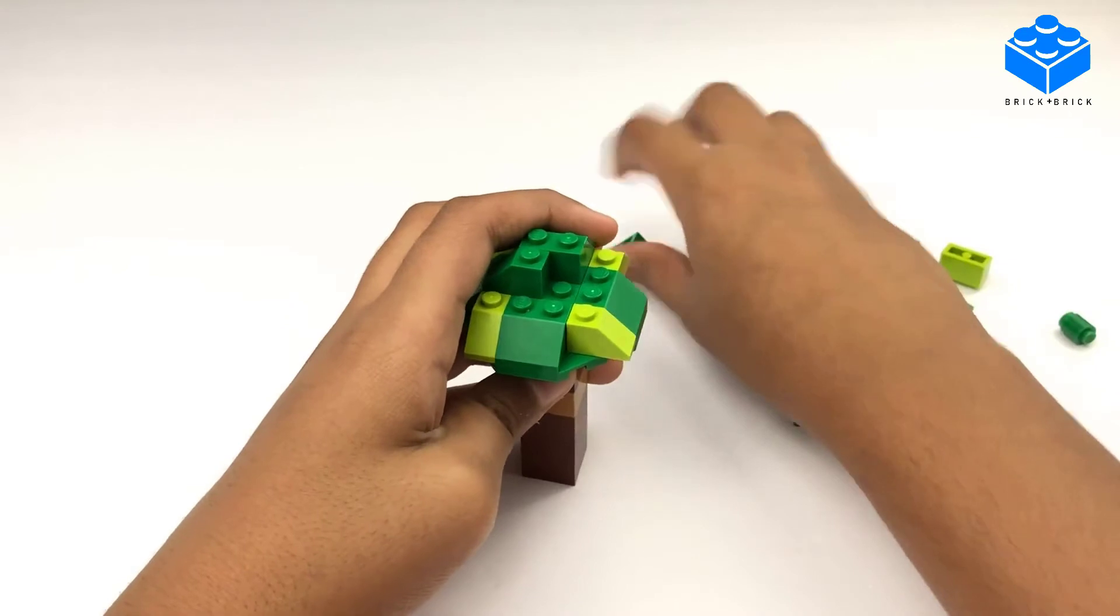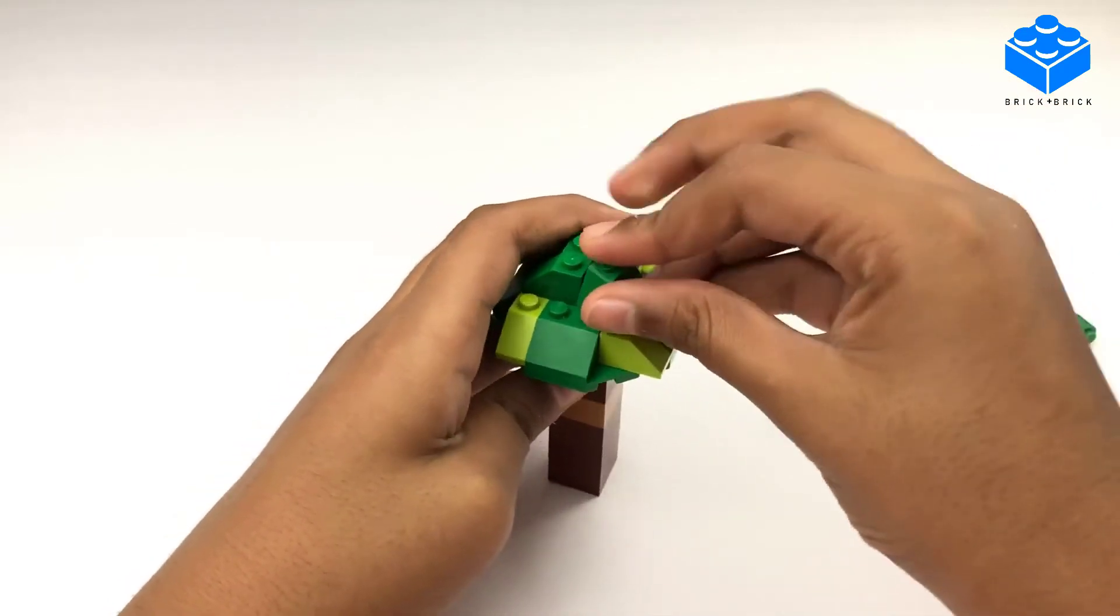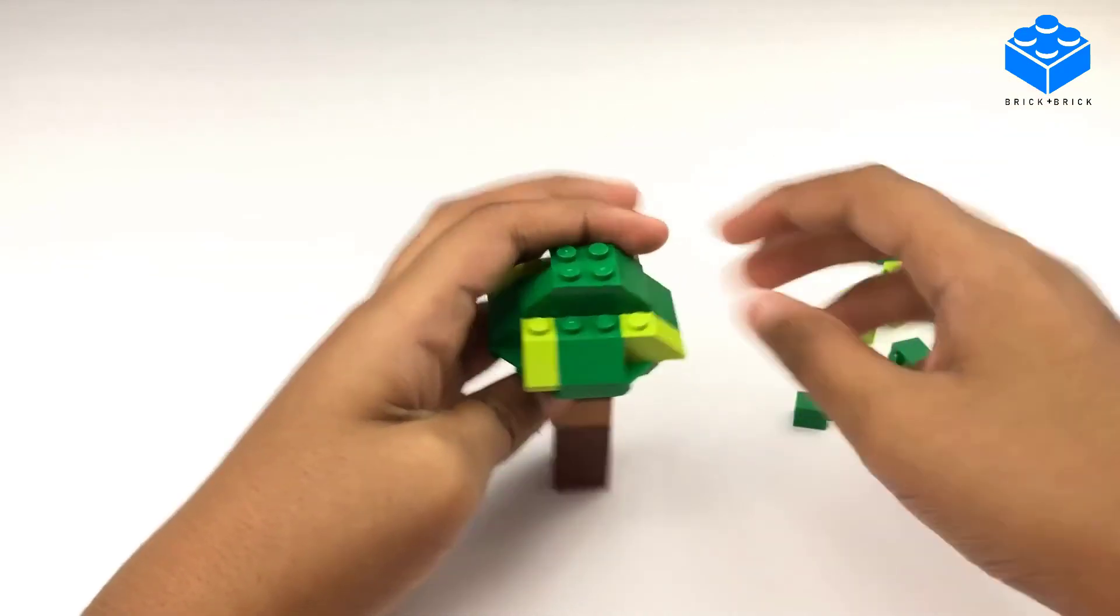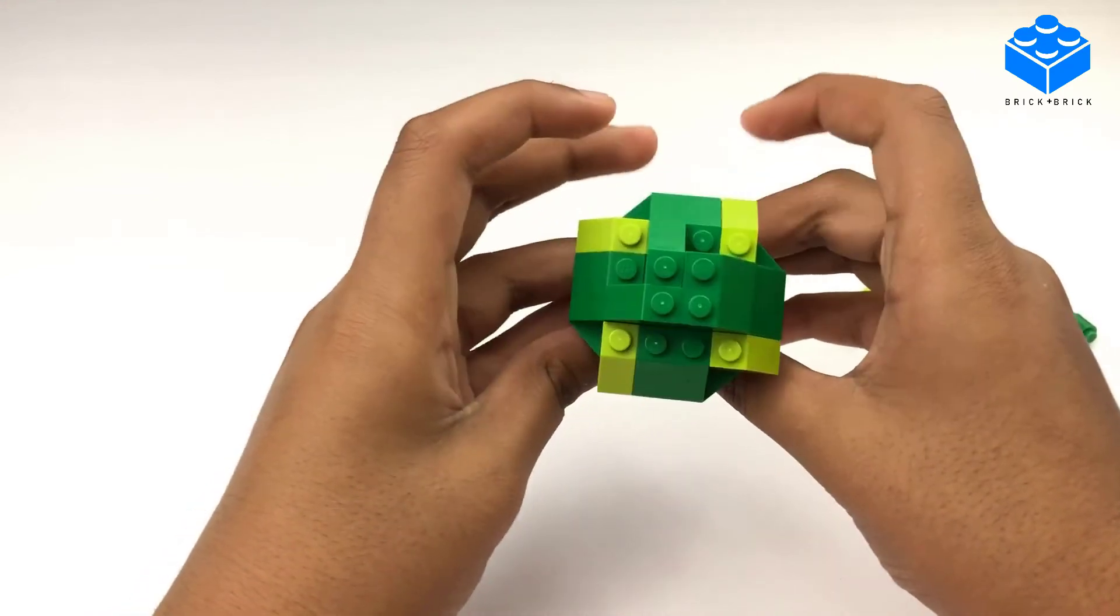So, you can put a certain amount of pieces here, certain amount of pieces there, however you'd like. But, for this example, I'm going to show it like this.